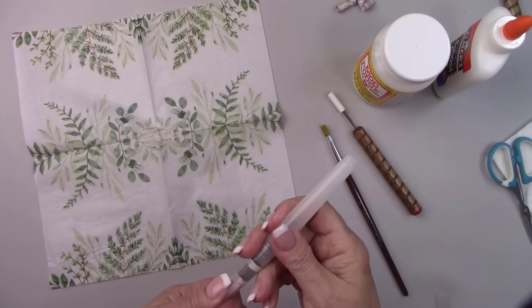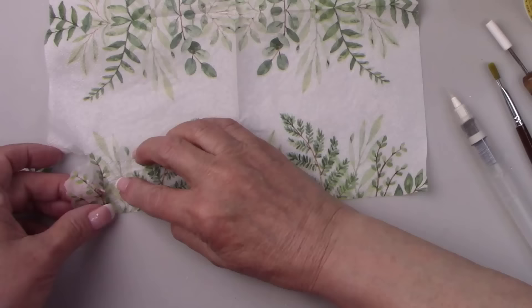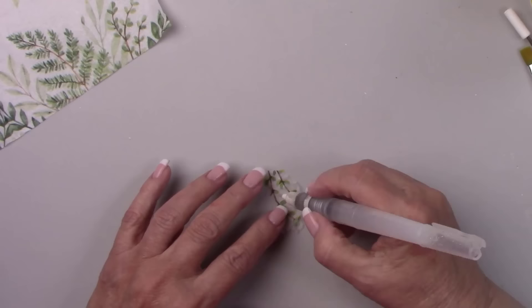I'm going to decoupage some of the tiny leaves from this napkin on one of the plain white cylinder beads using Mod Podge. I'm using a water brush to remove the pieces I want to use and gluing them on the bead with the Mod Podge.